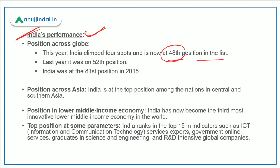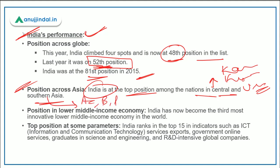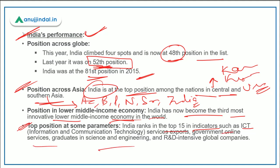Regarding India's performance, India's overall ranking is 48th in the list — last year India was at 52nd position, and in 2015 India was at 81st position. Across Asia, India is at the top position among nations in central and southern Asia — including countries like Kazakhstan, Kyrgyzstan, Uzbekistan, Afghanistan, Bangladesh, Pakistan, Nepal, and Sri Lanka. India has also become the third most innovative lower-middle-income economy in the world. India ranks in the top 15 in indicators like ICT services exports, government online services, graduates in science and engineering, and R&D-intensive global companies.